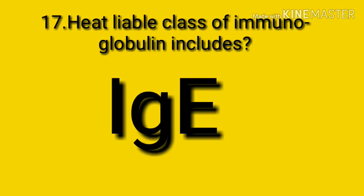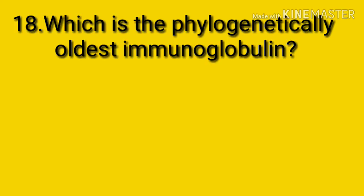Question number seventeen: the heat labile class of immunoglobulin is immunoglobulin E. Each antibody subclass exhibits a distinct heat tolerance, and IgE is especially known to be heat labile. IgE starts unfolding at lower temperatures compared to other antibodies because of the low stability of its CH3 domain.